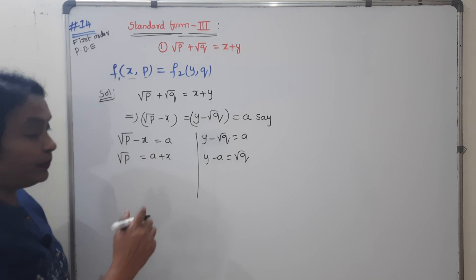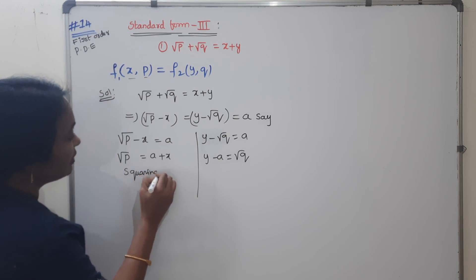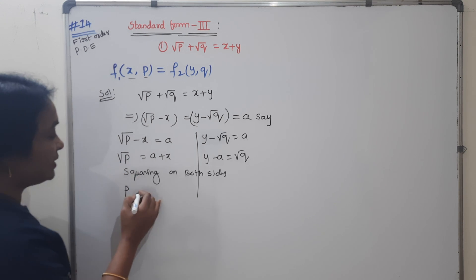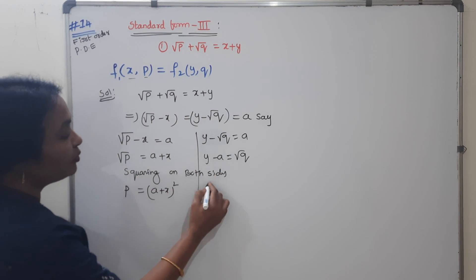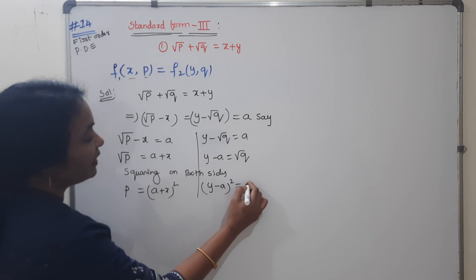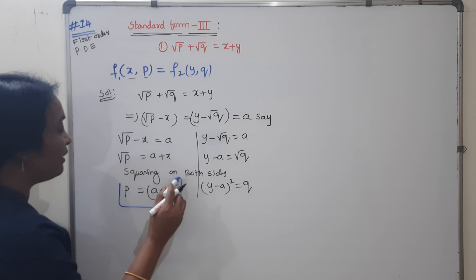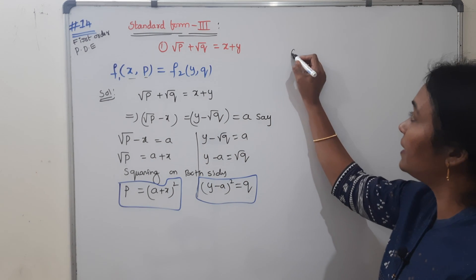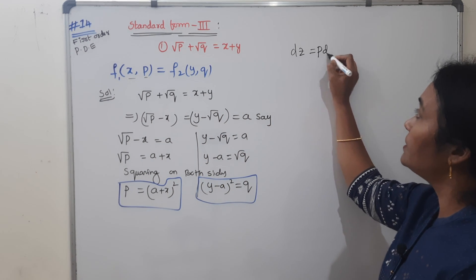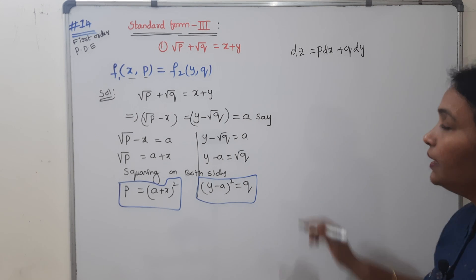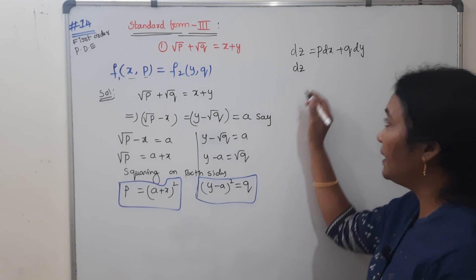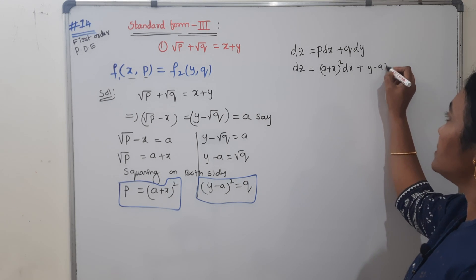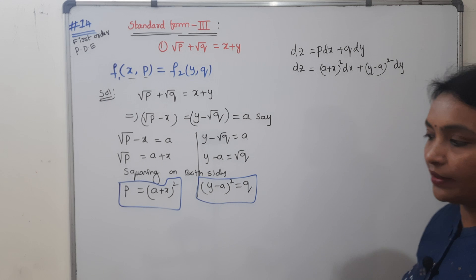If root P equals A plus X, squaring both sides gives P equals (A plus X) squared. And Q equals (Y minus A) squared. Now you have P and Q values. What is our Q? Q equals (Y minus A) whole square.